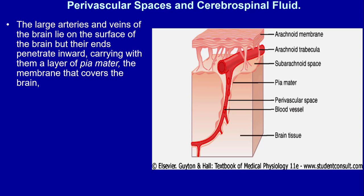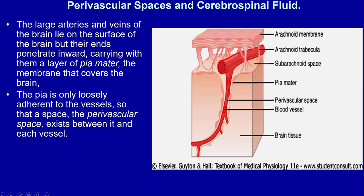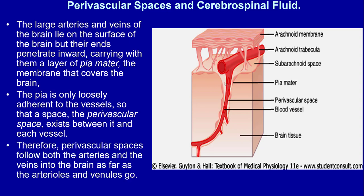Perivascular space: the large arteries and veins of the brain lie on the surface of the brain, but their branches penetrate inward, carrying with them a layer of pia mater — the membrane that covers the brain. The pia mater is only loosely adhered to the vessel, so that a perivascular space exists between it and each vessel. This space around the vessels is called the perivascular space, and it follows both the arteries and the veins into the brain as far as the arterioles and venules go.